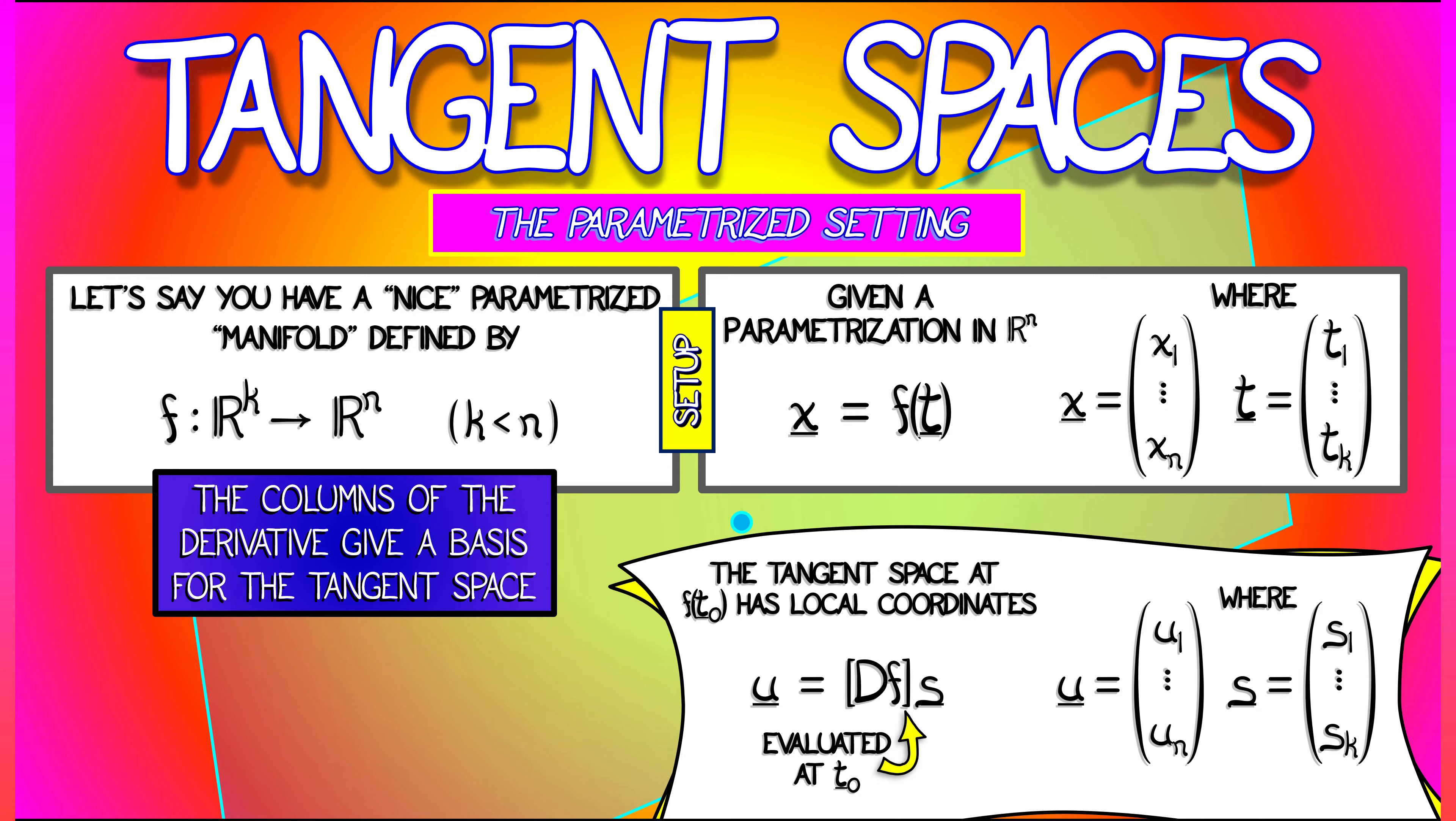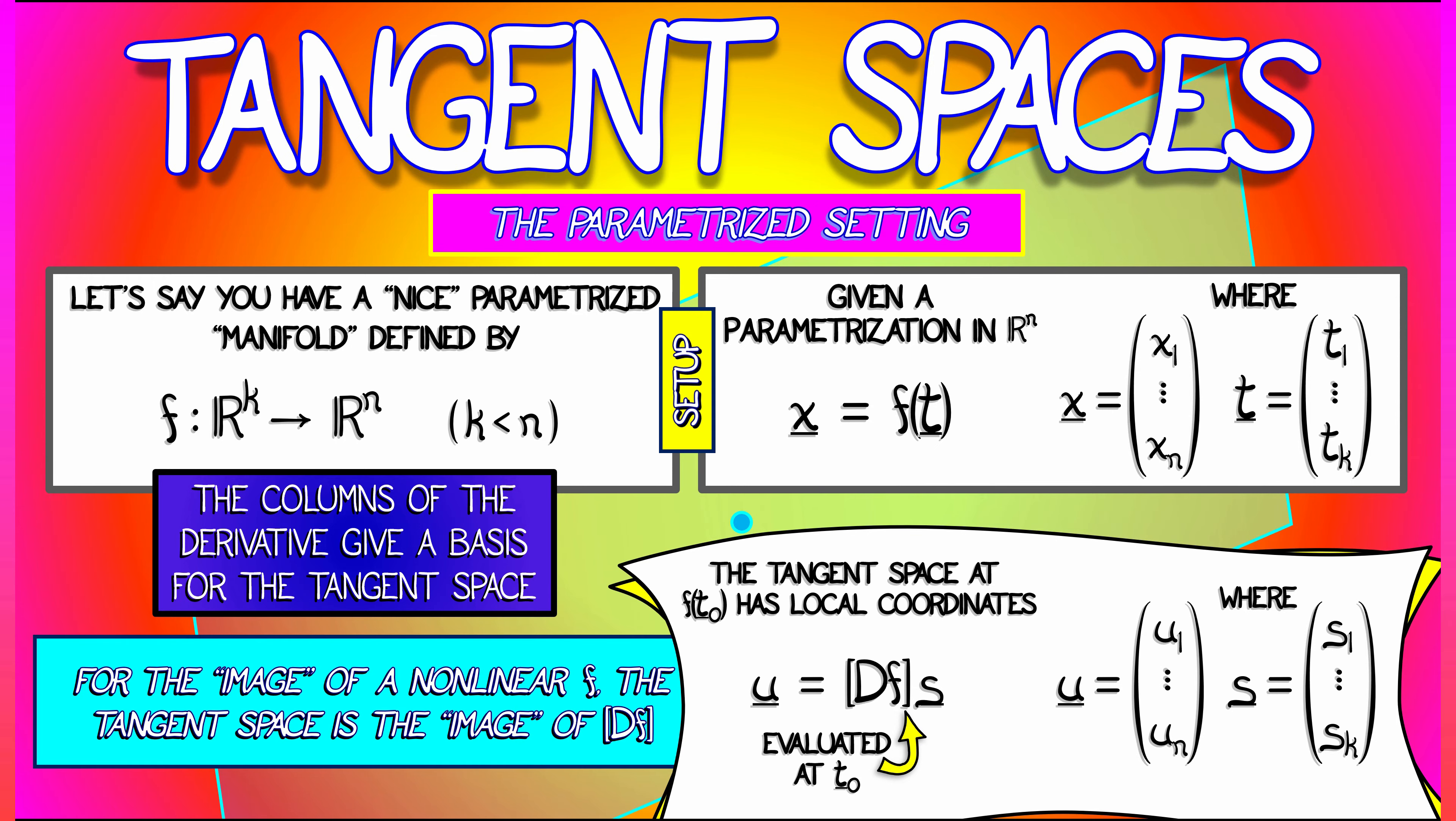We take that derivative matrix evaluated at T0. The columns of that matrix are the basis tangent vectors. So again, for the image of this nonlinear function F, the tangent space is the linearized image. It's really the image of the matrix DF evaluated at the particular point.